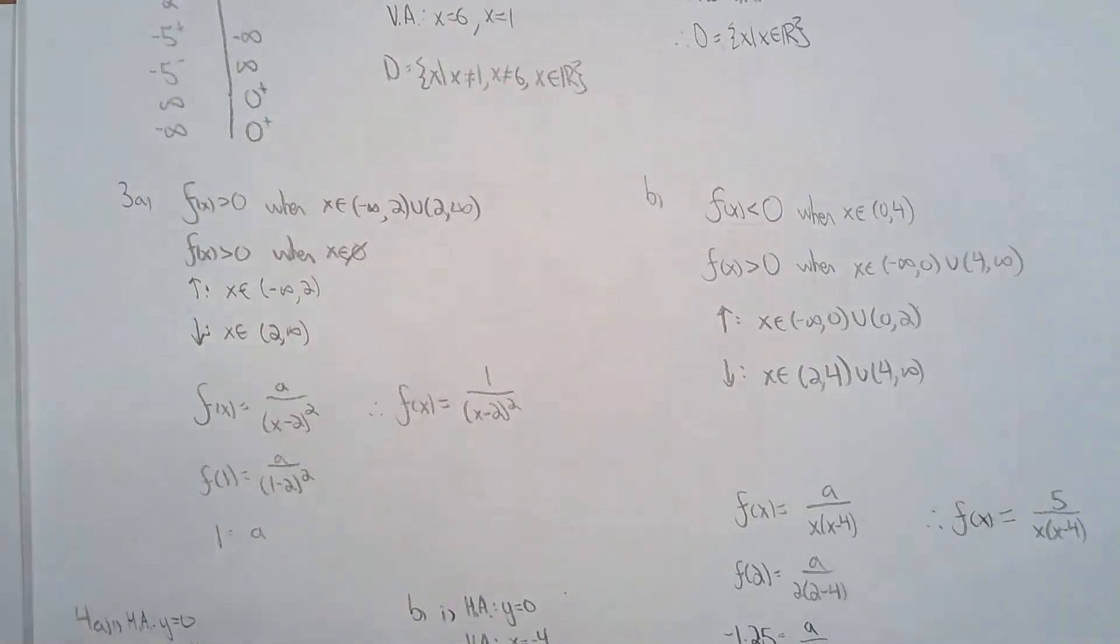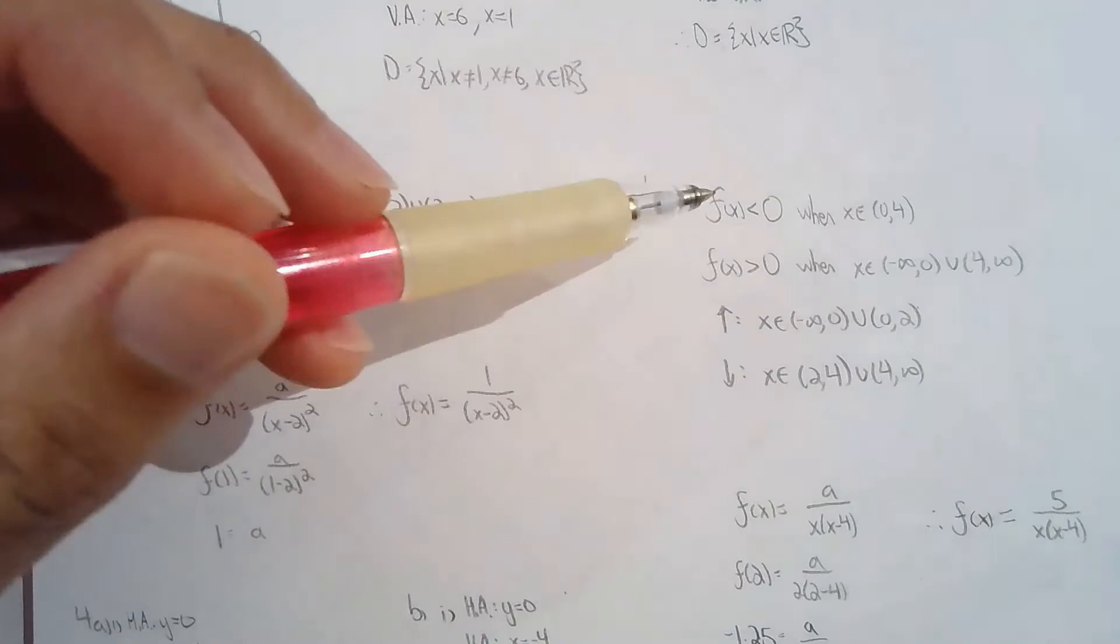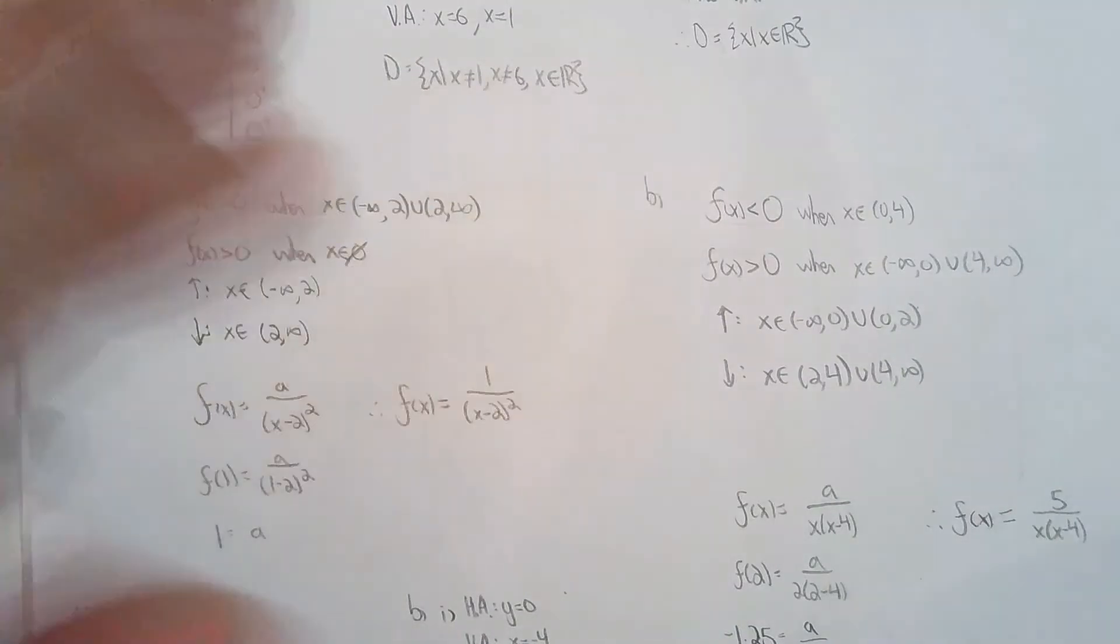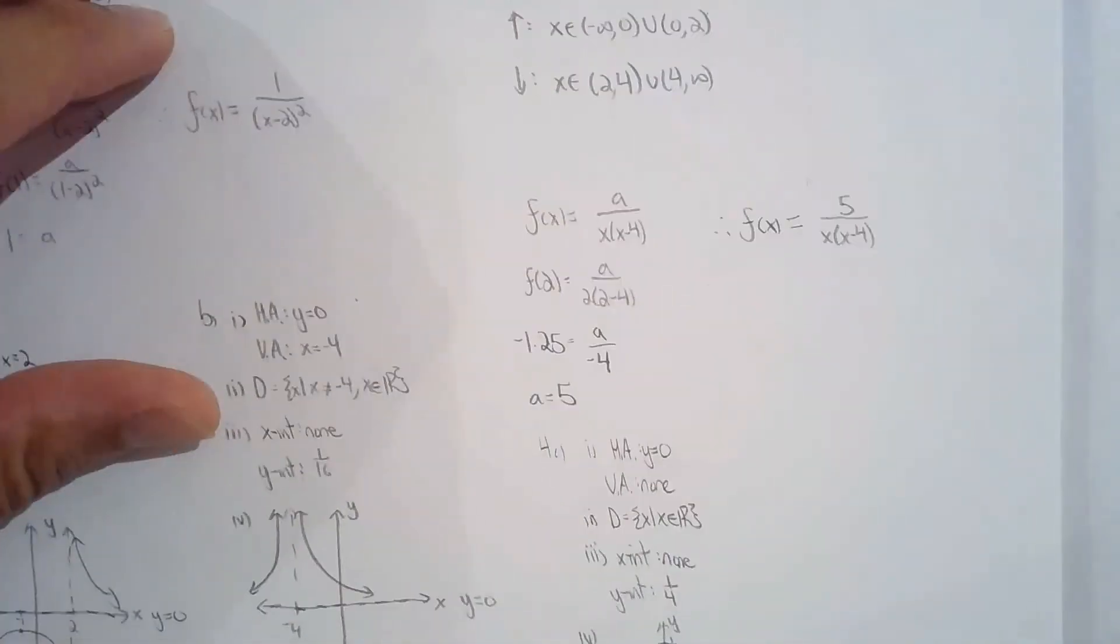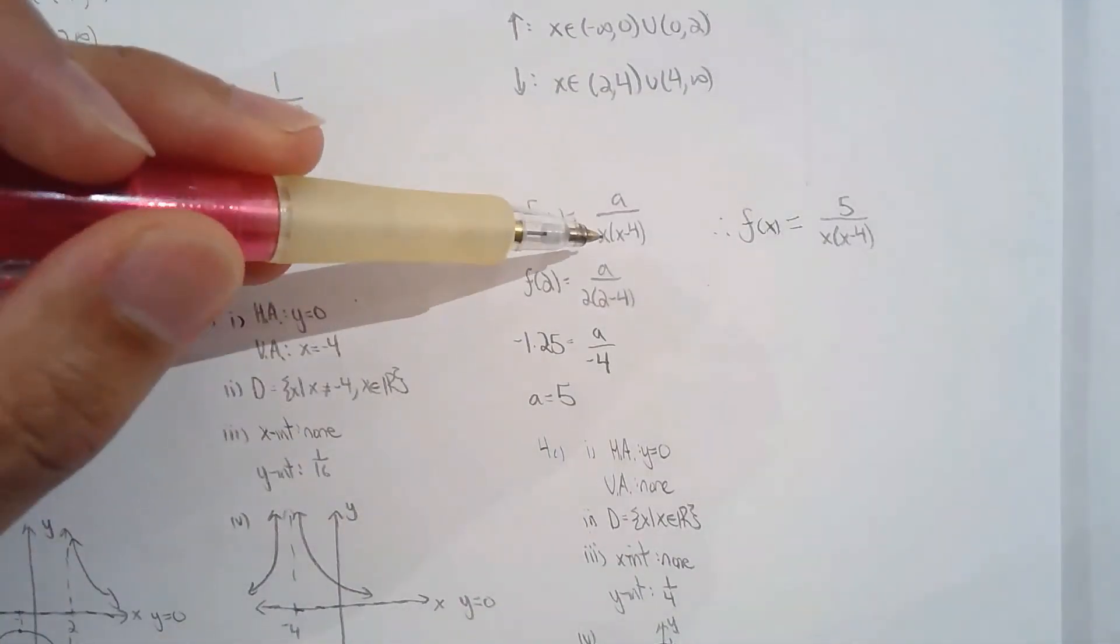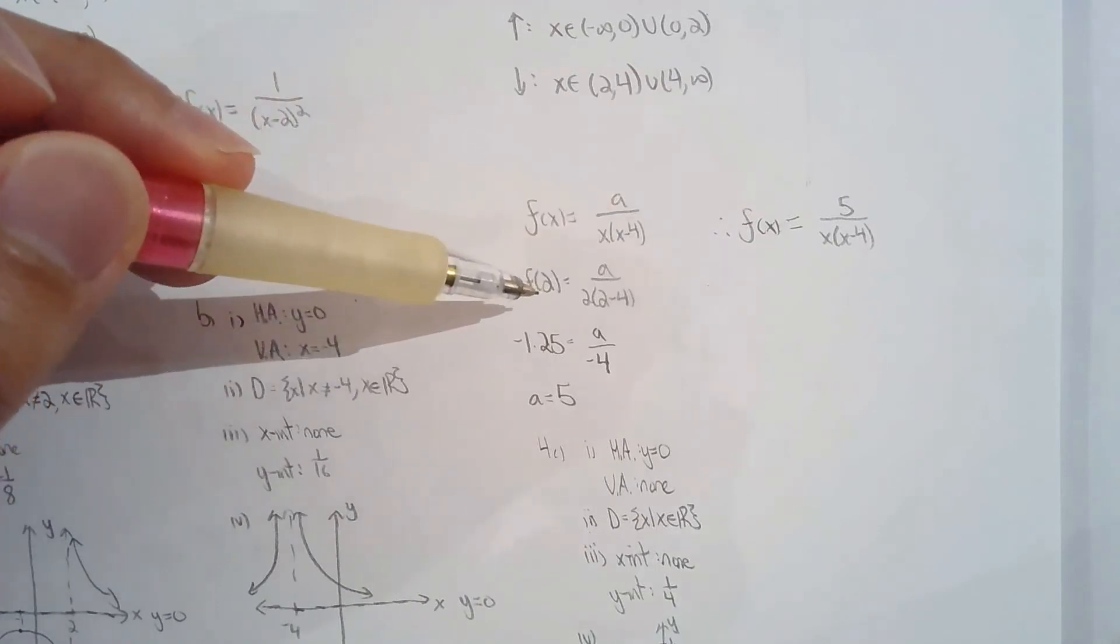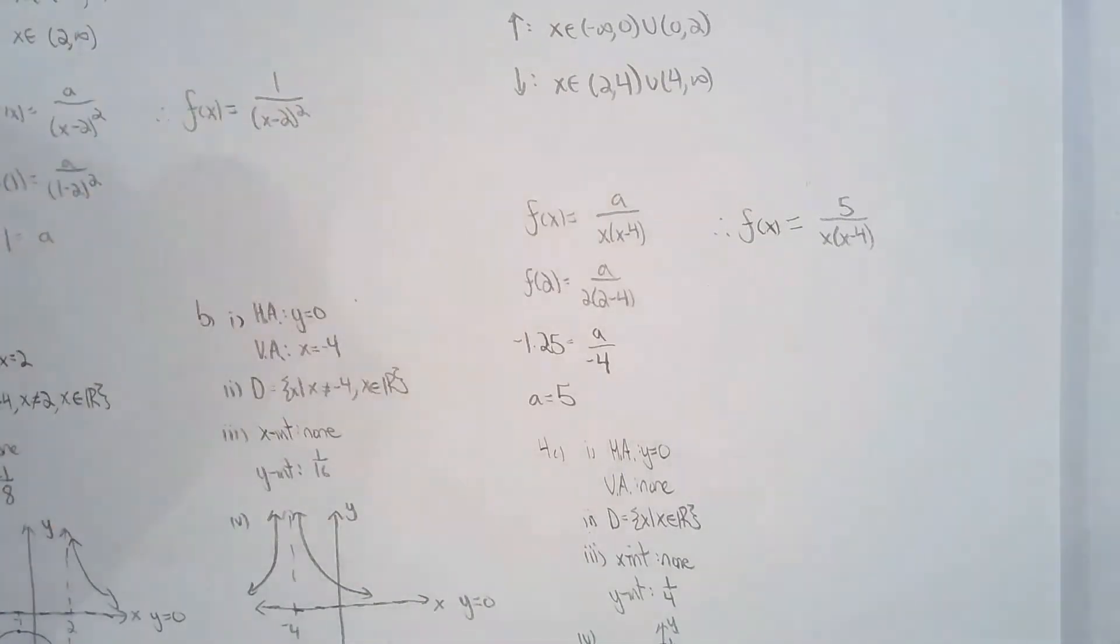And then I subbed into 0.11, and I solve for a. For b, same thing. I had the graph in front of me, so I can find out when is it greater than zero, when is it less than zero, when is it increasing, when is it decreasing, and I solved for the factors of the denominator using the vertical asymptote. Then I subbed in the point that was provided for me, and it solves for the numerator value, which is 5.